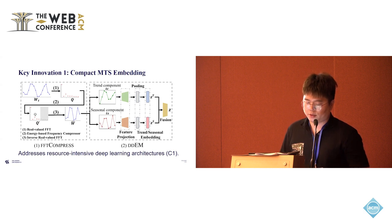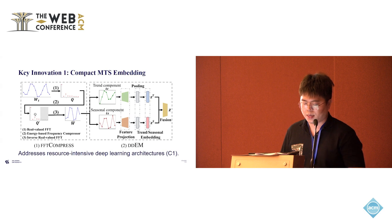The DDEM component further processes the compressed MTS by decomposing it into trend and seasonal components. These components are then embedded with lightweight modules and combined into comprehensive MTS embeddings. By using FFT-Compress and DDEM, we create an efficient and effective encoder that addresses the challenge of resource-intensive deep learning architecture.